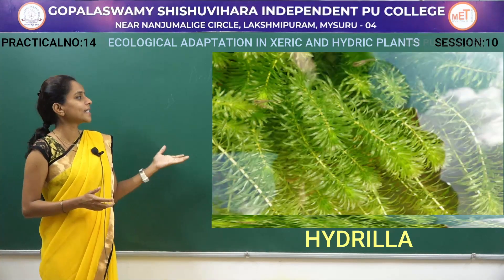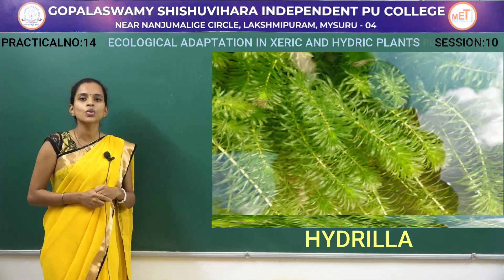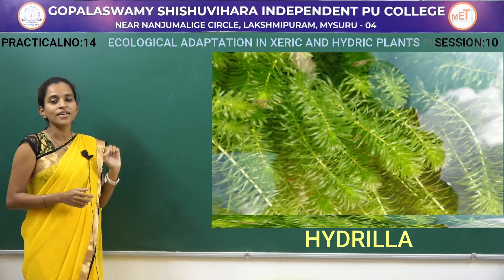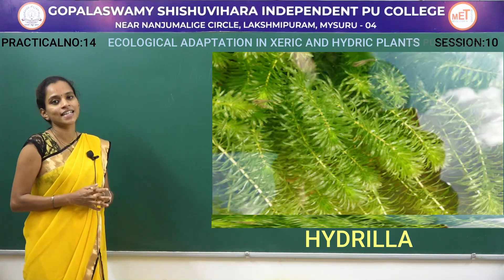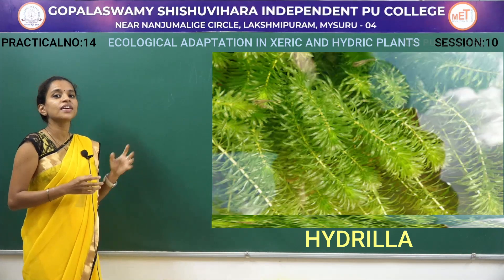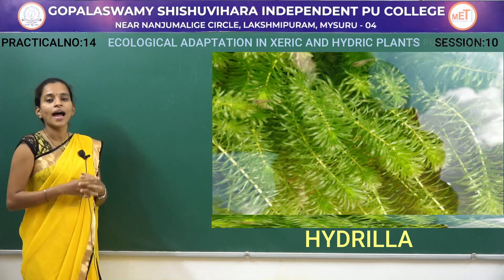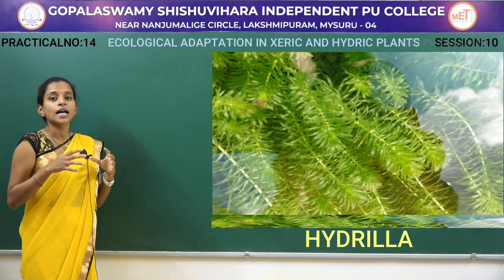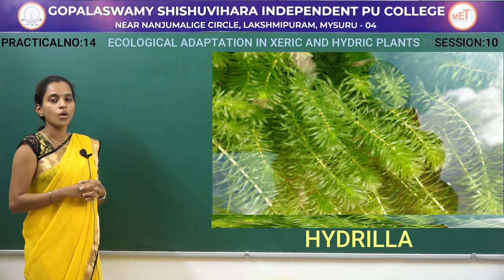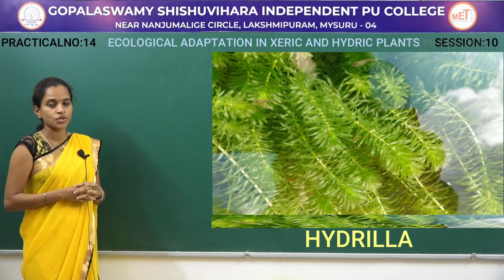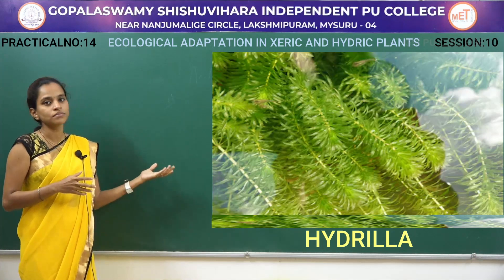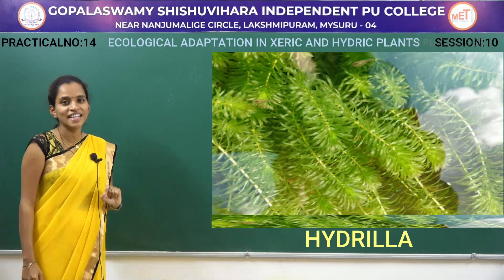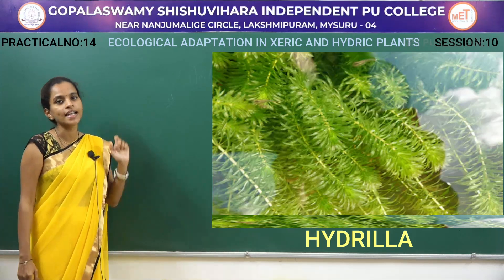Next one is Hydrilla. In this diagram you can see that Hydrilla has small, finely dissected leaves. The leaves are very small and finely dissected because these plants are completely submerged in water, so they can overcome the intake of excess water by having smaller, finely dissected leaves.